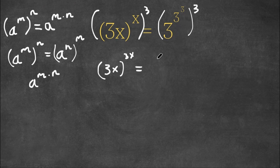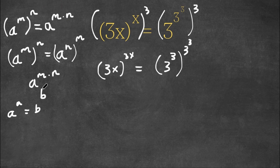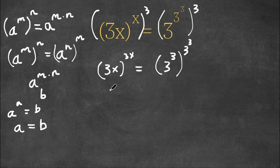So right here, we have 3 to the power of 3 to the power of 3, and this can be written as 3 to the power of 3 to the power of 3. Now, if we have something in the form a to the power of a is equal to b to the power of b, then this means that a is equal to b. As you can see here, 3x to the power of 3x — the exponent and the base are the same. And same here, 3 to the power of 3 — the exponents are the same. Meaning, this gives us 3x is equal to 3 to the power of 3.